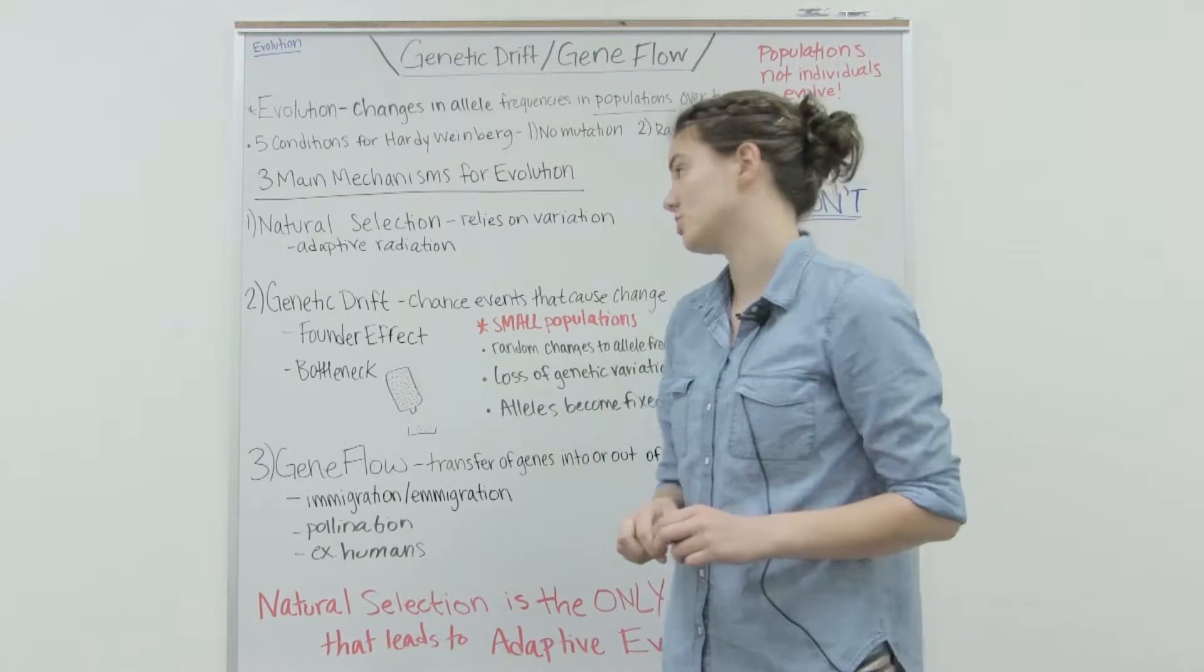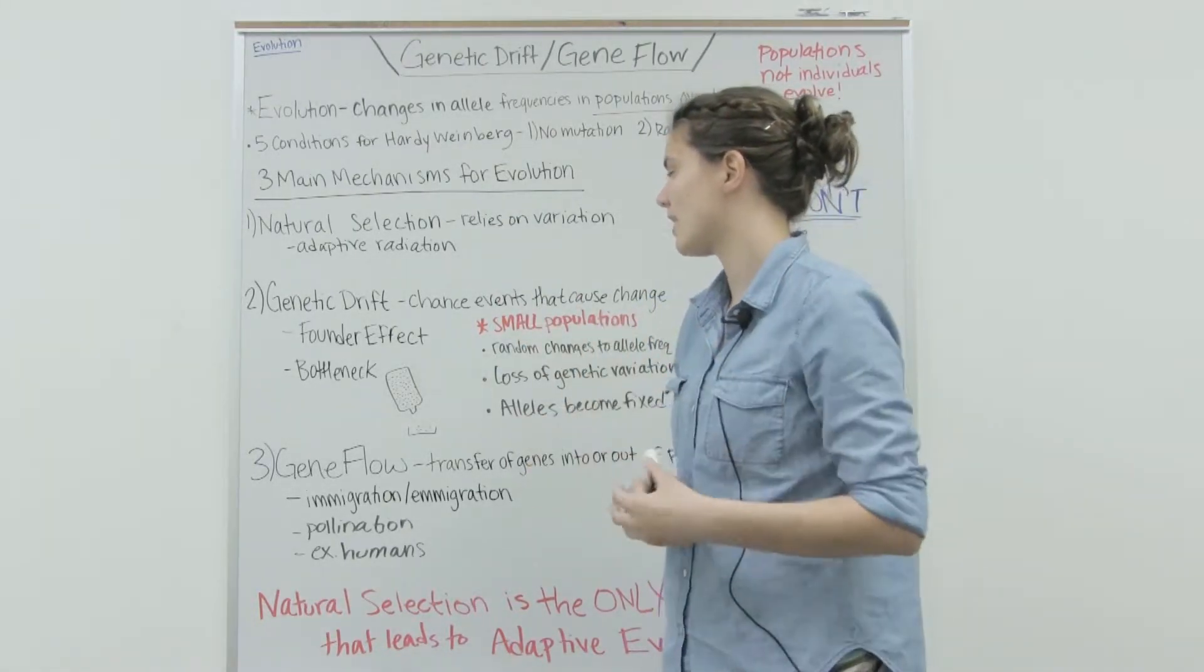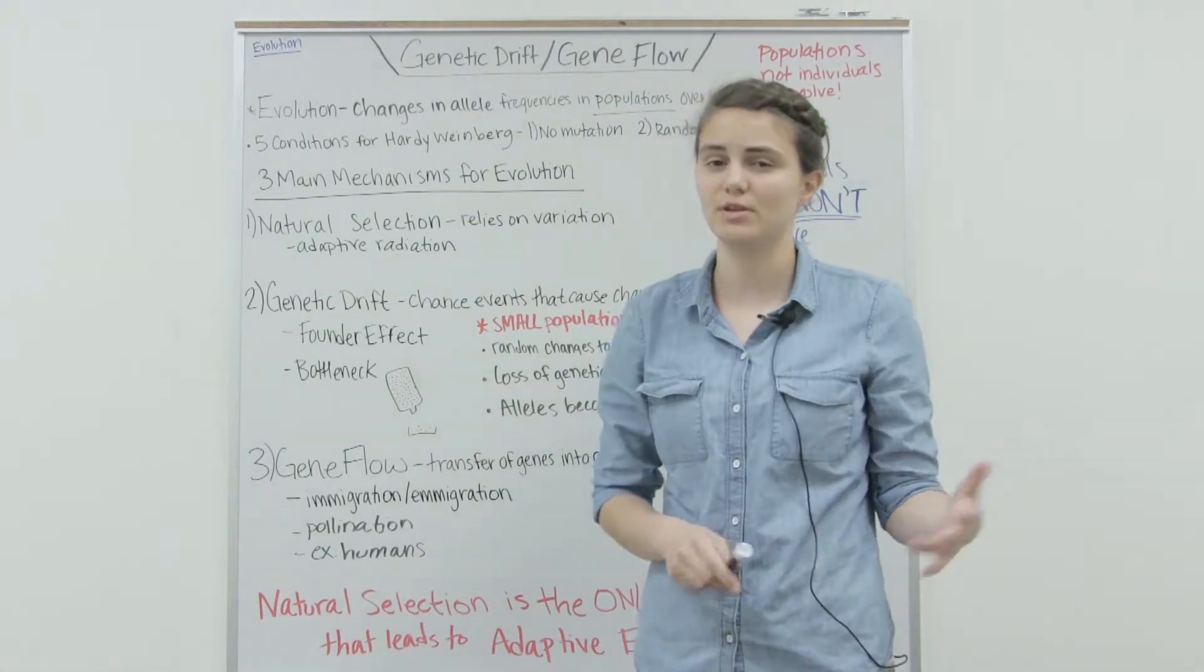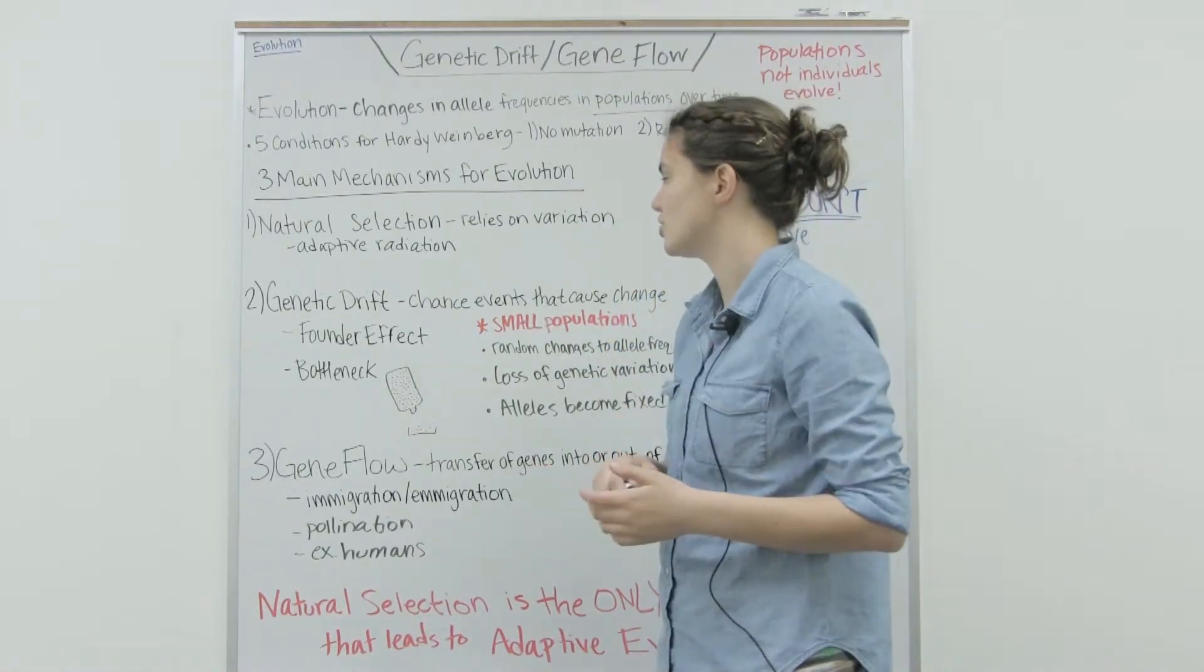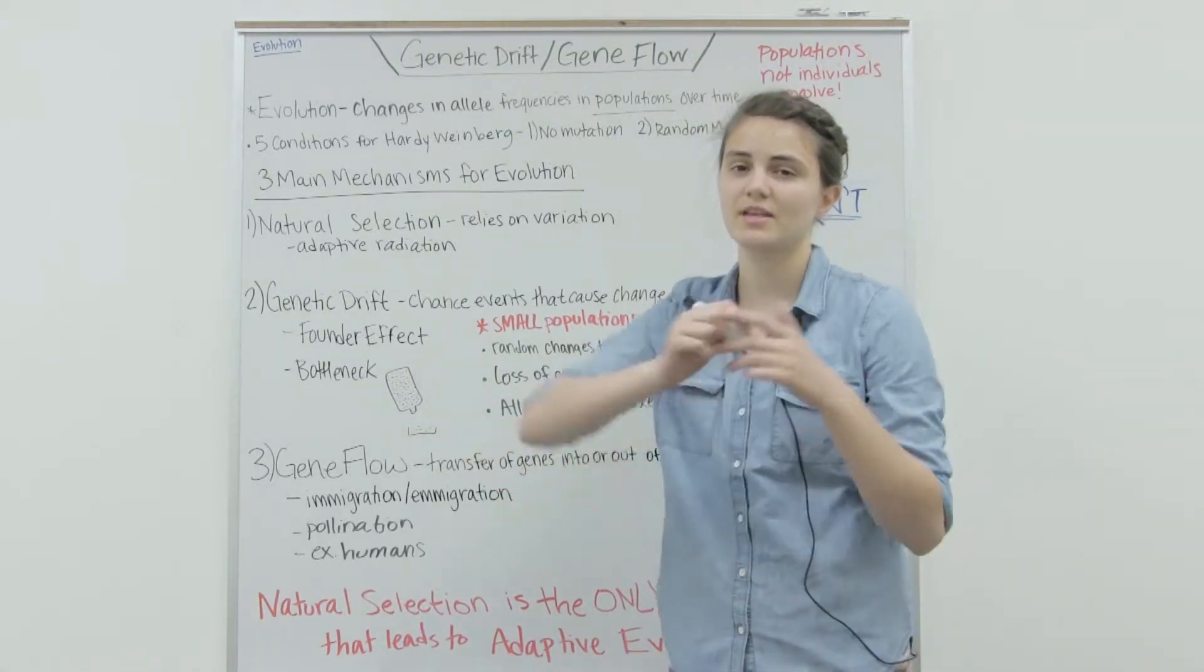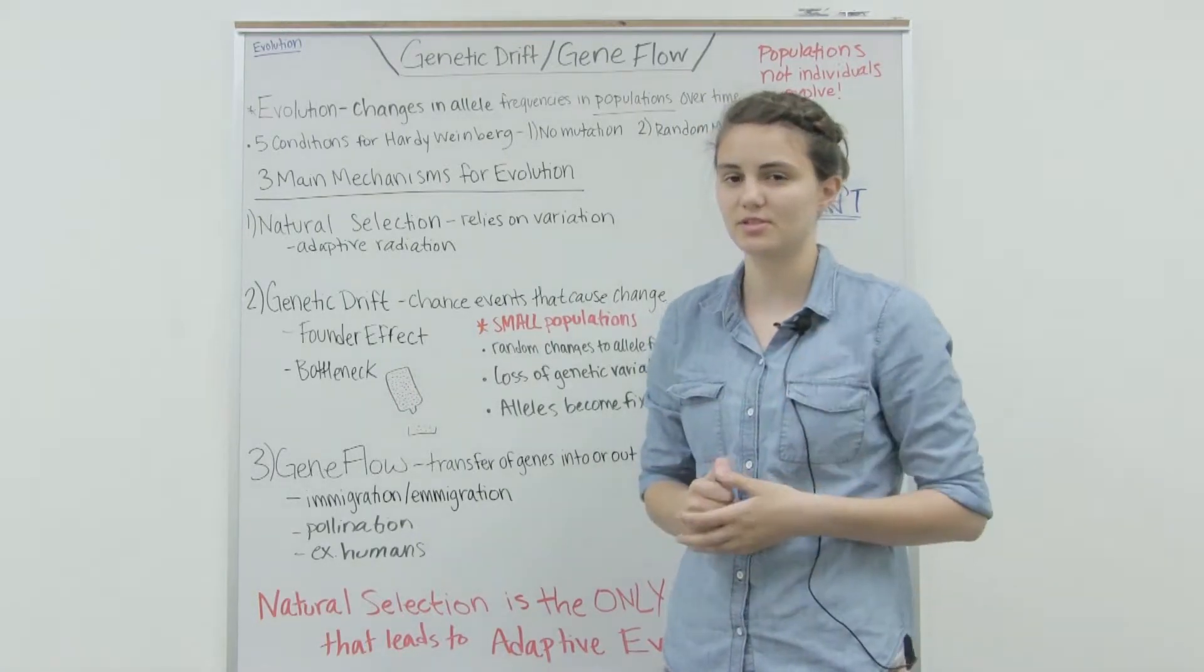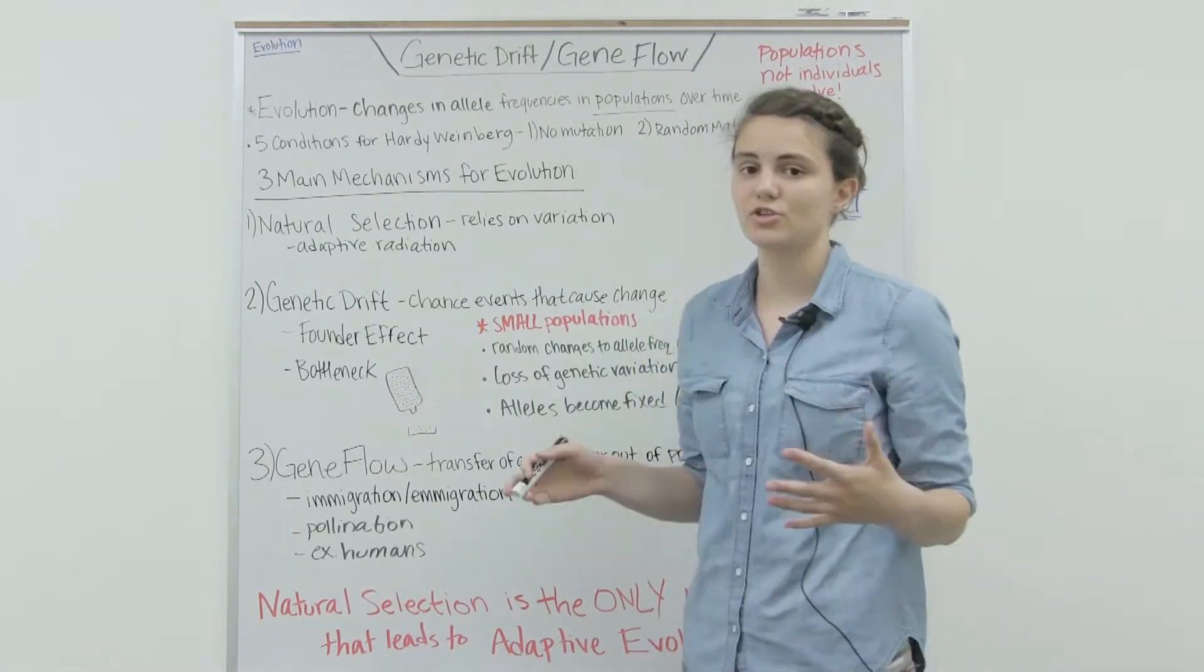This mechanism relies on variation in a population, and it involves adaptive radiation. The main idea is that we have a population, and there is a need for survival because there's lots of organisms and limited resources, or predators or something.